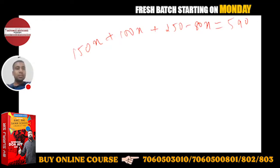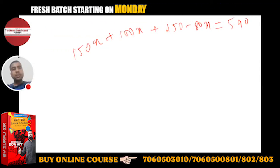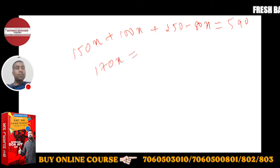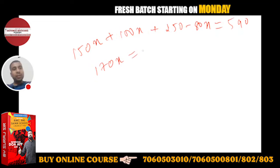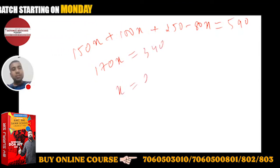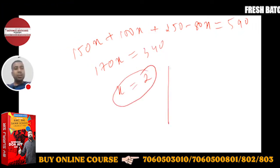So this will be 170x is equal to 590 minus 250, which will give me 340. X will be equal to 340 upon 170, so x is equal to 2. If x is equal to 2, now you have 50 rupees notes.